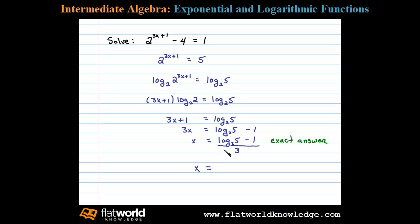Now working this on a calculator and taking care to use the change of base formula, we get x is approximately equal to 0.4406. This is our approximate answer rounded off to four decimal places.